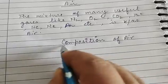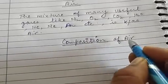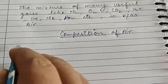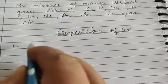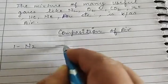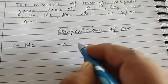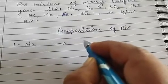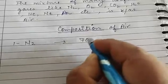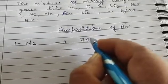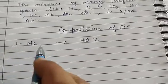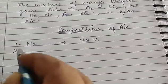What is the composition of air? Which components are present in air? First component: nitrogen gas. Nitrogen gas in air is present about 78%.